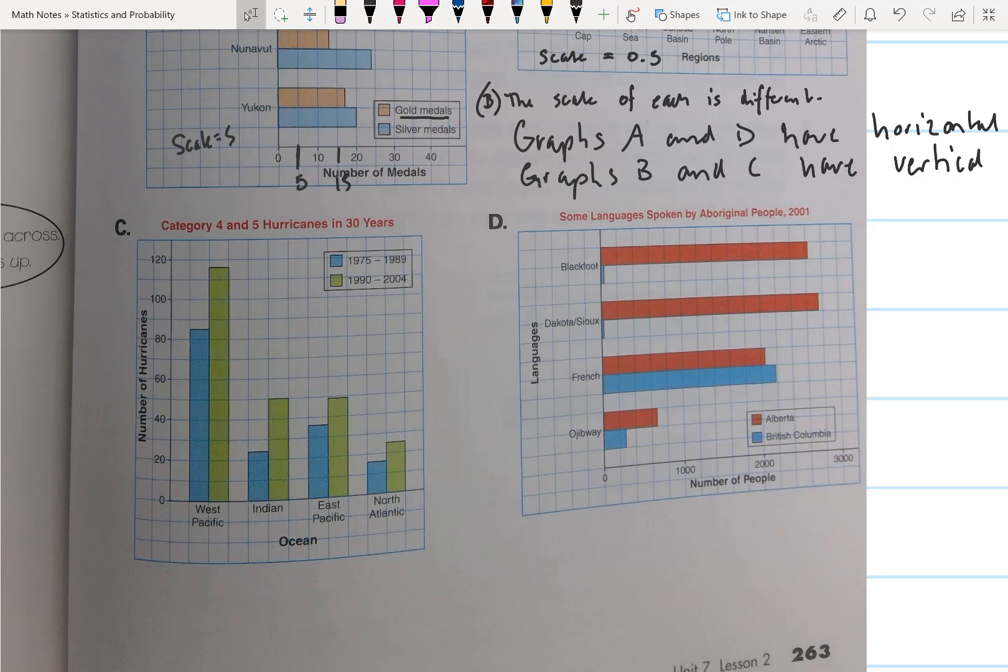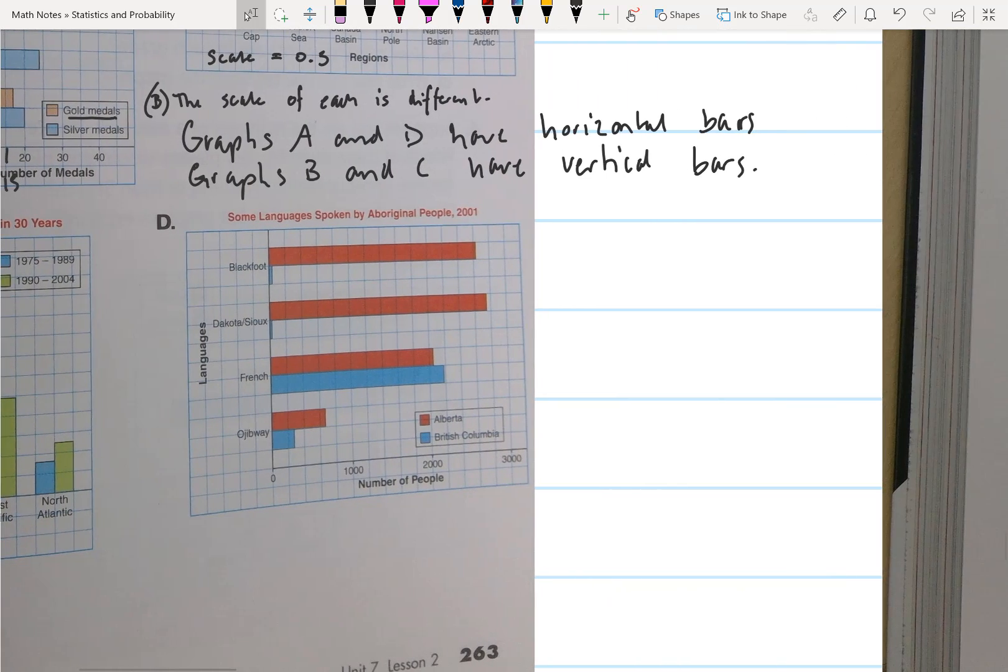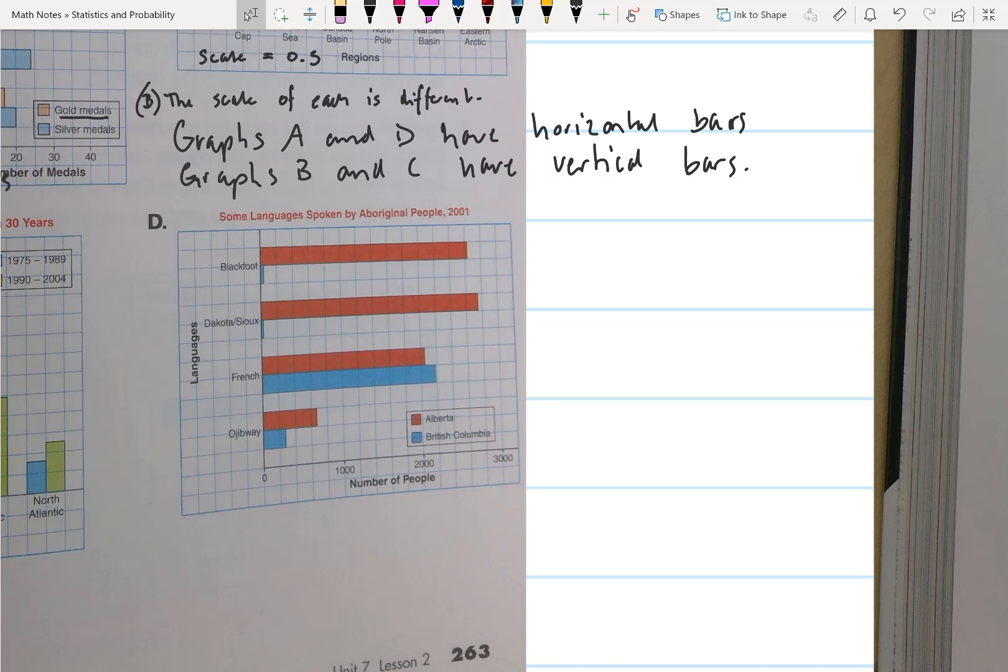Now let's take a look at graph D. Some languages spoken by Aboriginal people. British Columbia is represented by the blue. We can see that a number of people in Alberta speak Blackfoot, Sioux, Dakota, French, Ojibwe.